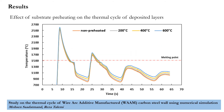To mitigate the thermal stress, substrate preheating is one of the most effective methods. As shown in this figure, the first peak temperature value increases with the increase of the preheating temperature. Also, when increasing the preheating temperature, the average cooling speed decreases.